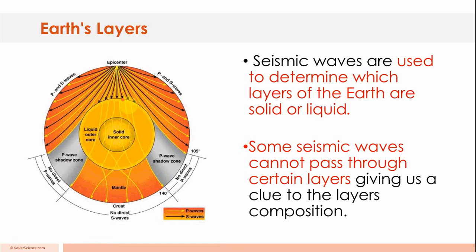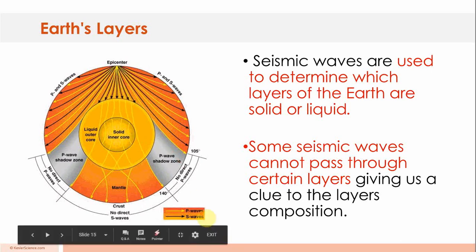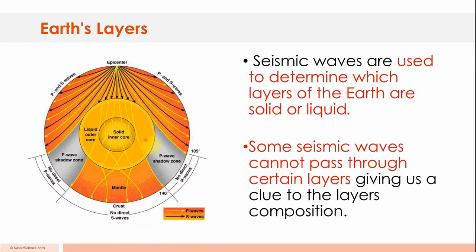So remember, S waves or secondary waves are the black ones. P waves, primary waves are the yellow ones. Remember, secondary waves cannot pass through liquid. Do you see this? The liquid outer core is blocking these S waves, these secondary waves.